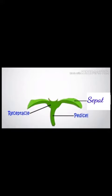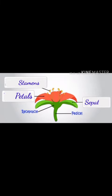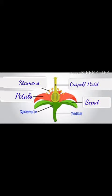Now there are four main parts of a flower. First is the sepal, second is the petals, third is the stamen — or we can say the male reproductive part — and the last one is the carpel or the pistil, which is the female reproductive part of a flower. Let's learn each of them one by one.